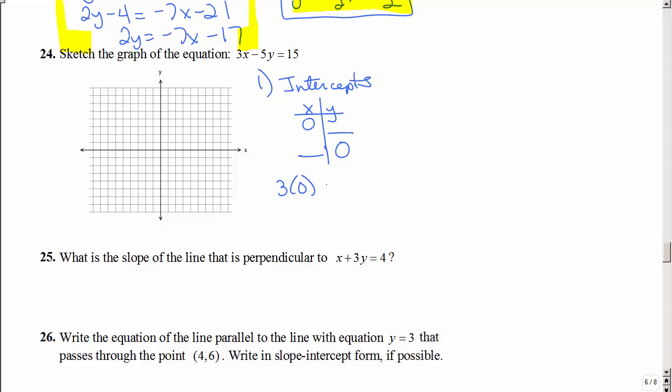So 3 times 0 minus 5y equals 15, y equals negative 3, and then you could also let y equal to 0. So I have 3x minus 5 times 0 equals 15. So x is 5. So I could plot those points, 0, 1, 2, 3, and then 1, 2, 3, 4, 5, and get that line. And I'm done.